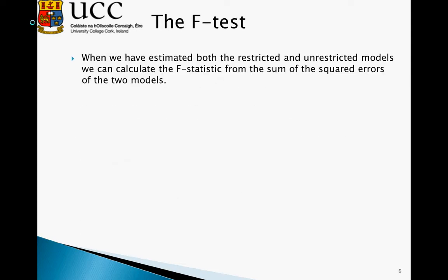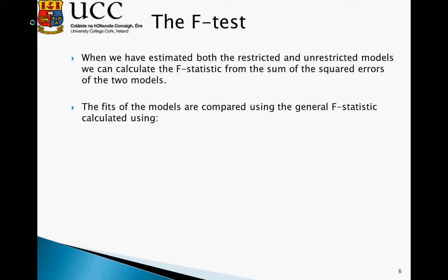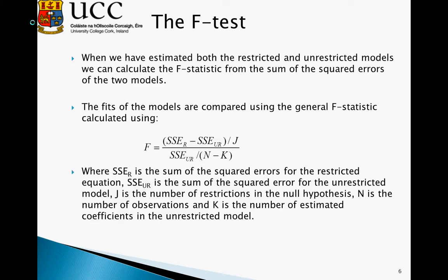When we've estimated both the restricted and unrestricted models, we can calculate the F-statistic from the sum of squared errors of the two models. The F-statistic is equal to the sum of squared errors of the restricted model minus the sum of squared errors of the unrestricted model, divided by j. This is all over the sum of squared errors of the unrestricted model divided by n minus k.